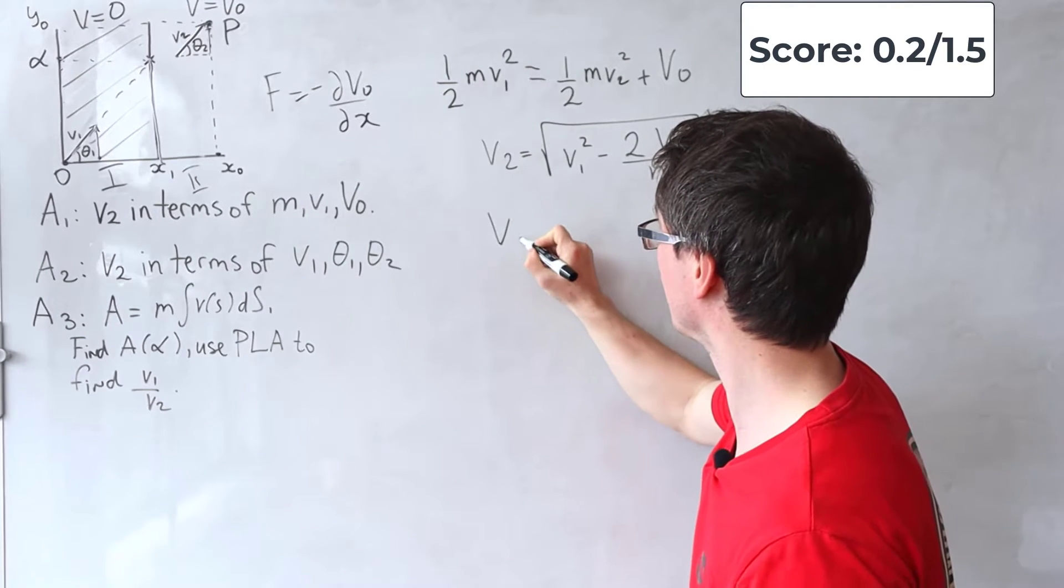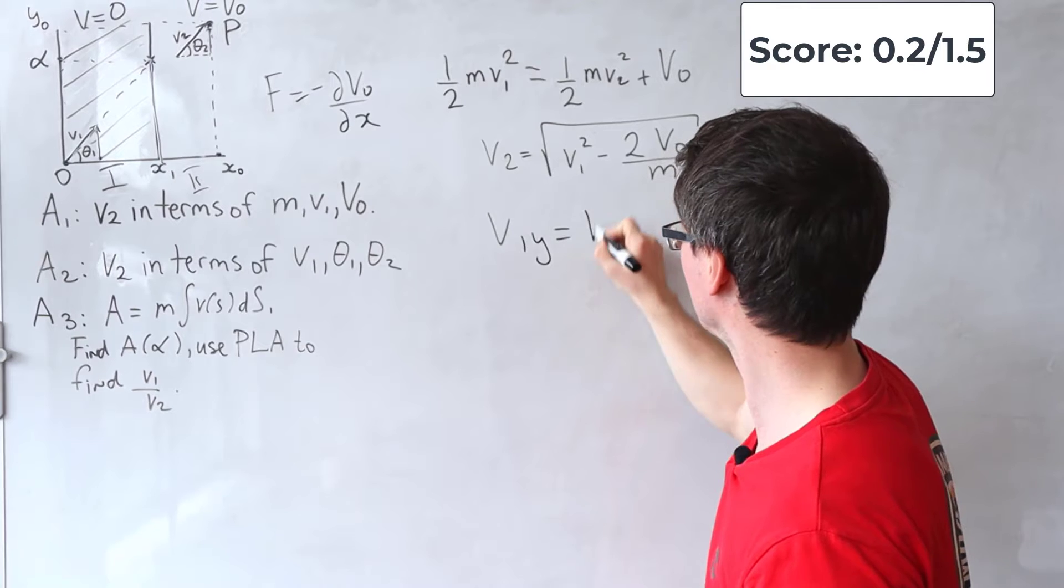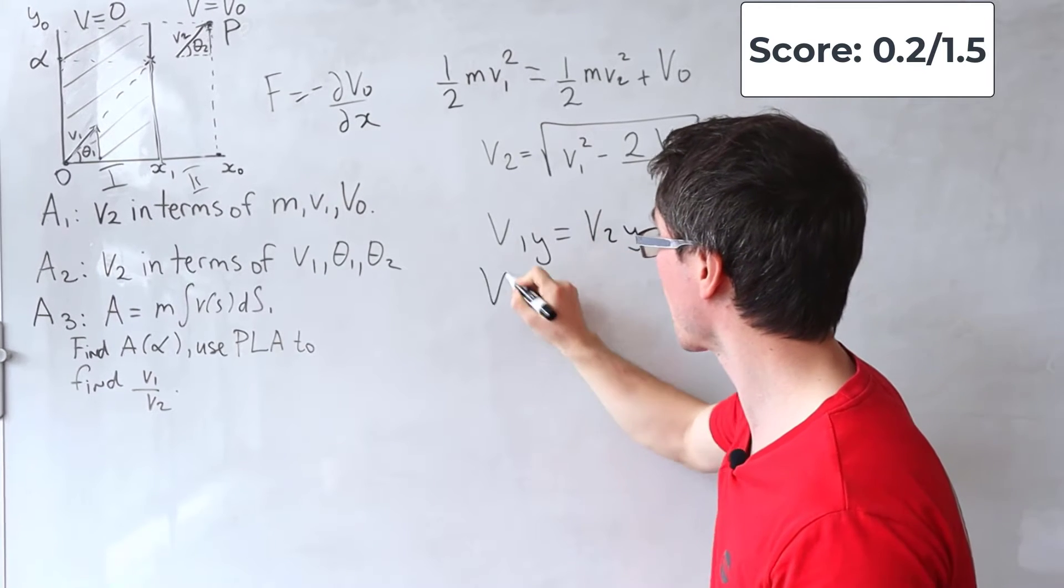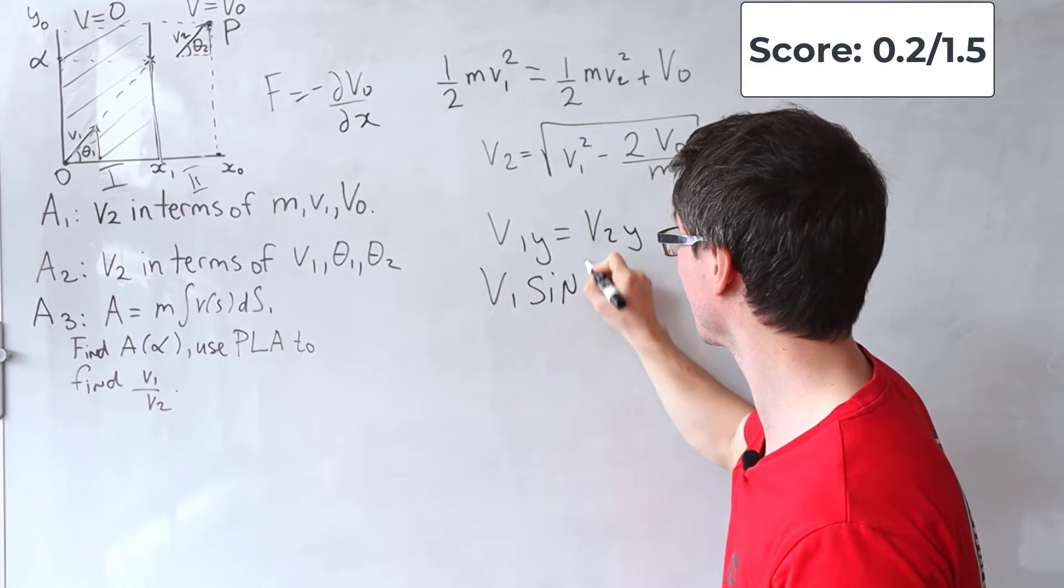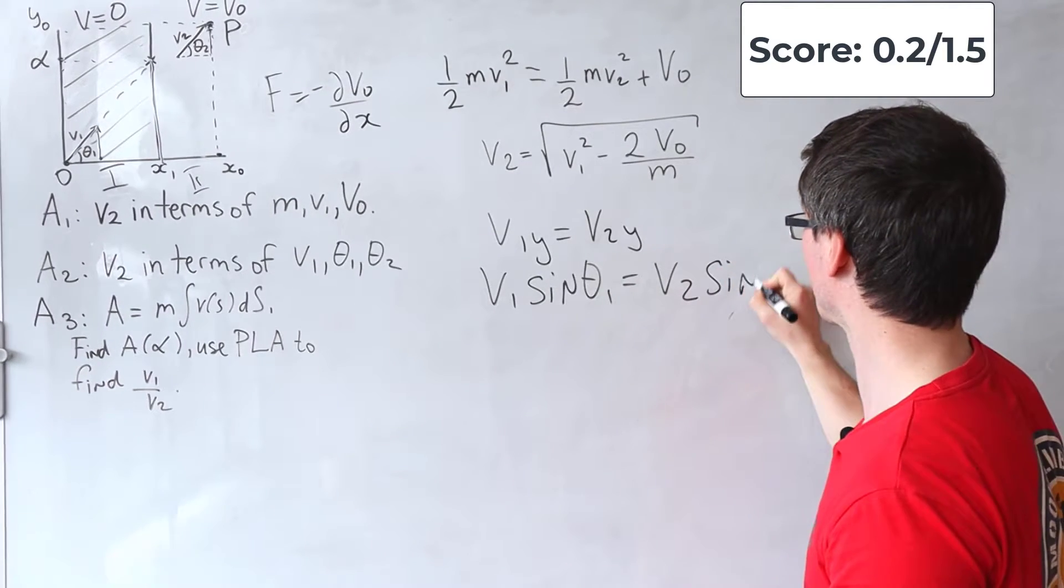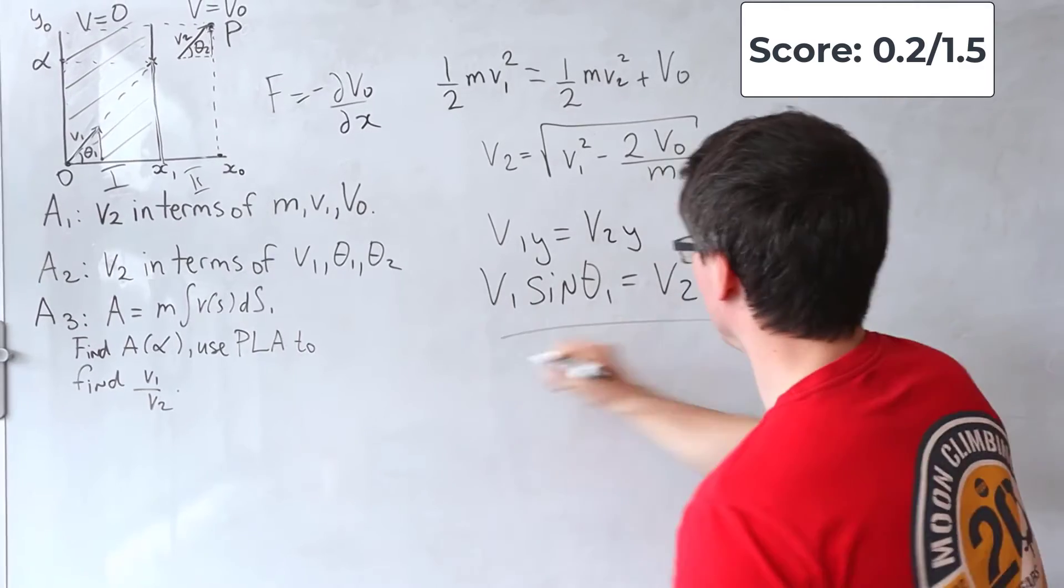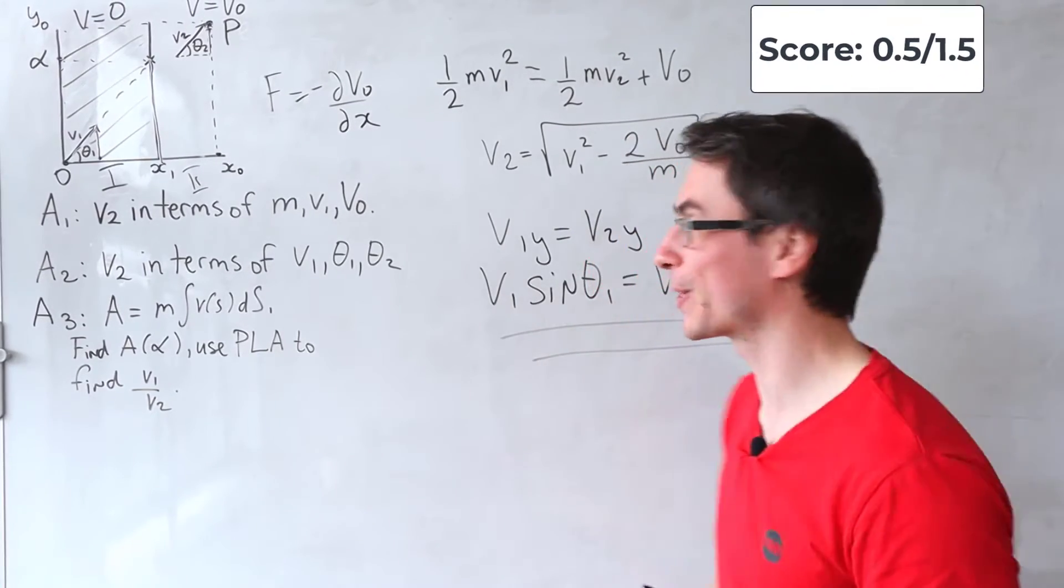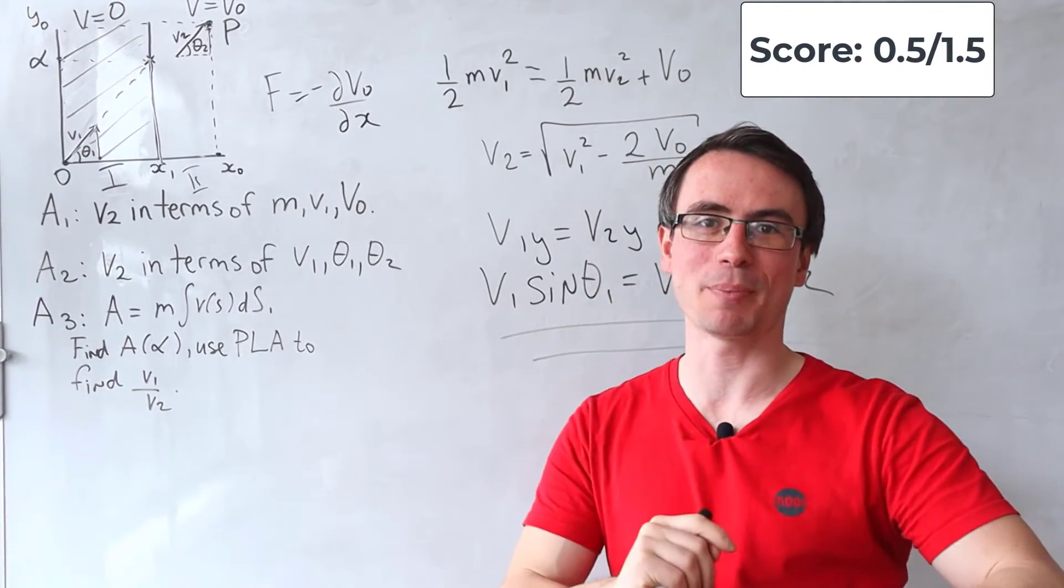Therefore, we can write that V1y will be equal to V2y, i.e. V1 sine Theta1 will be equal to V2 sine Theta2. And we have scored another 0.3 points.